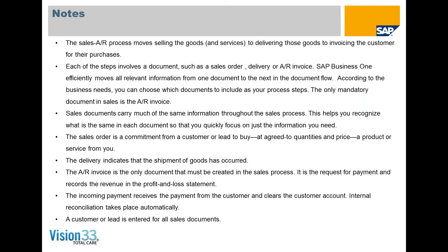The sales AR process moves from selling goods and services, to delivering those goods, to invoicing the customer for their purchases. Each step involves a document such as a sales order, a delivery, or an AR invoice. SAP Business One efficiently moves all relevant information from one document to the next in the document flow. According to your business needs, you can choose which documents to include, but the only mandatory document is the AR invoice. Sales documents carry a lot of the same information through the process, helping you recognize what's the same and quickly focus on the differences.